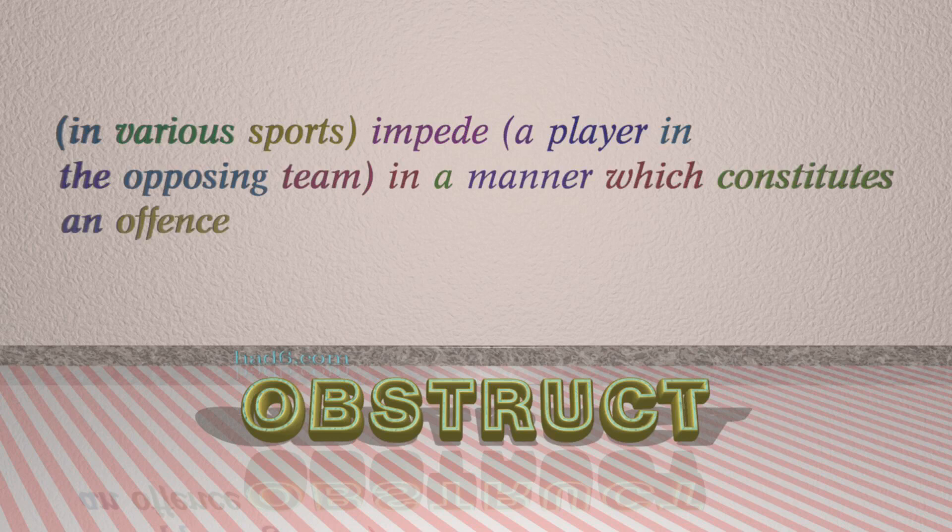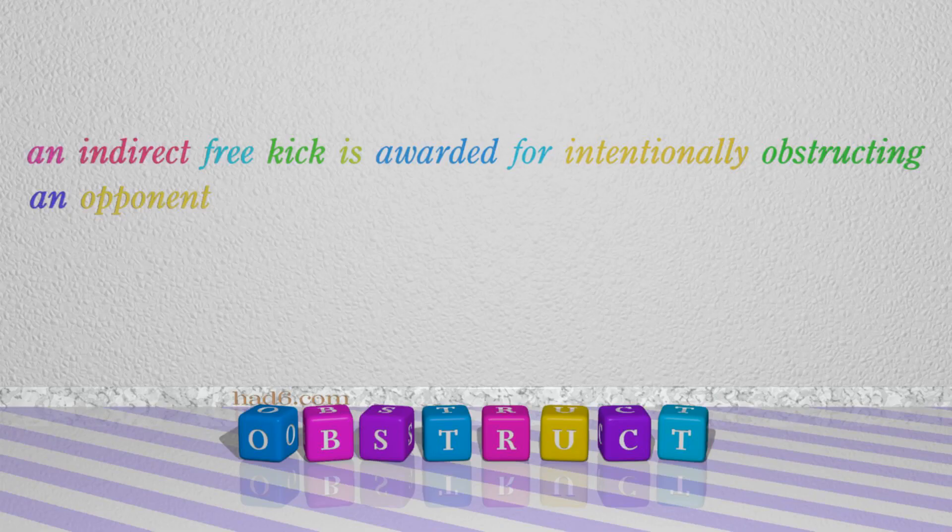Number 3: Obstruct. Which means: in various sports, impede a player in the opposing team in a manner which constitutes an offence. For example: An indirect free kick is awarded for intentionally obstructing an opponent.